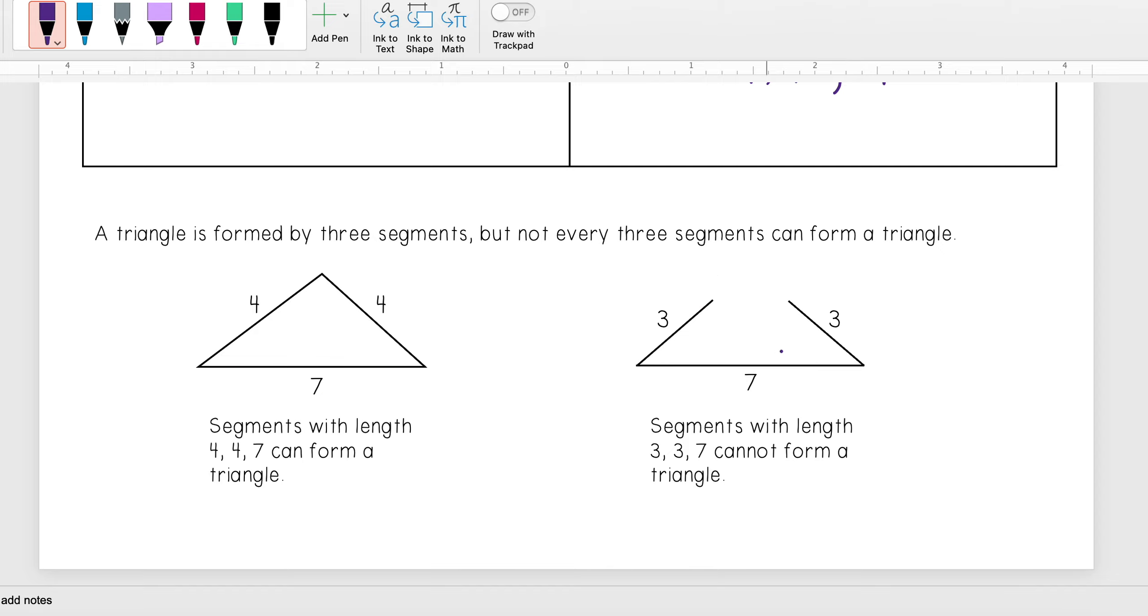However, I see over here if I were to change my 4s to be 3s, these side lengths would not be long enough in order to actually completely form that triangle. And so these three side lengths cannot form a triangle.